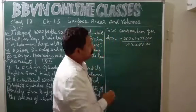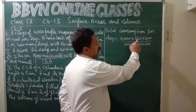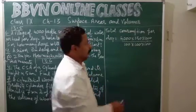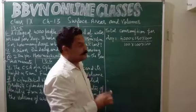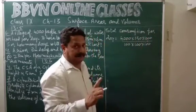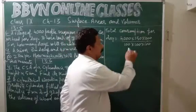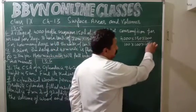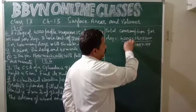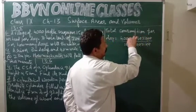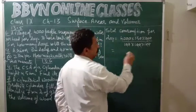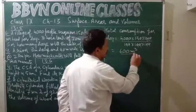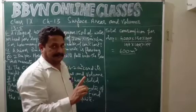So four thousand persons, each person requires 150 liters; one liter is 1000 centimeter cube, so I have multiplied it by 1000. This becomes the total consumption of water per day in centimeter cube. I have to convert it into meter cube because the dimensions of the tank are in meters. After cancelling the zeros — one, two, three, four, five, six — we get 15 into 40, which is 600 meter cube. This is the requirement of the village per day.